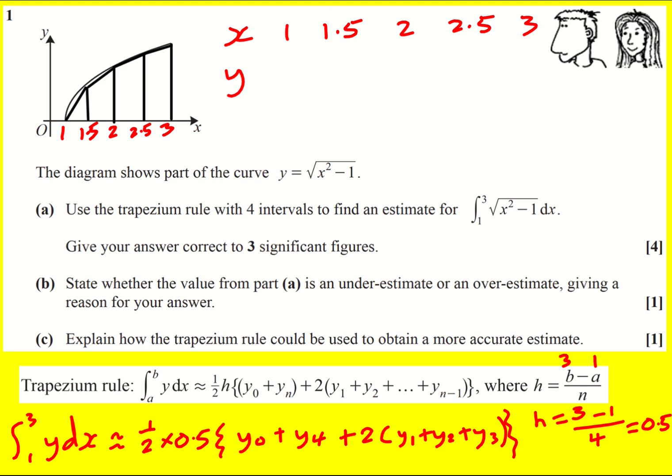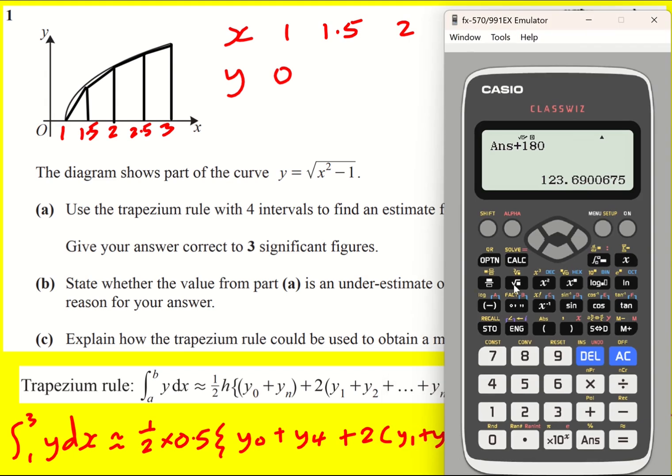And I'm going to write down the y values that correspond with each of these. So this is x0, y0 is going to be 0 when I do 1 squared minus 1 square rooted. And then I'm going to use my calculator for the rest, just to be careful.